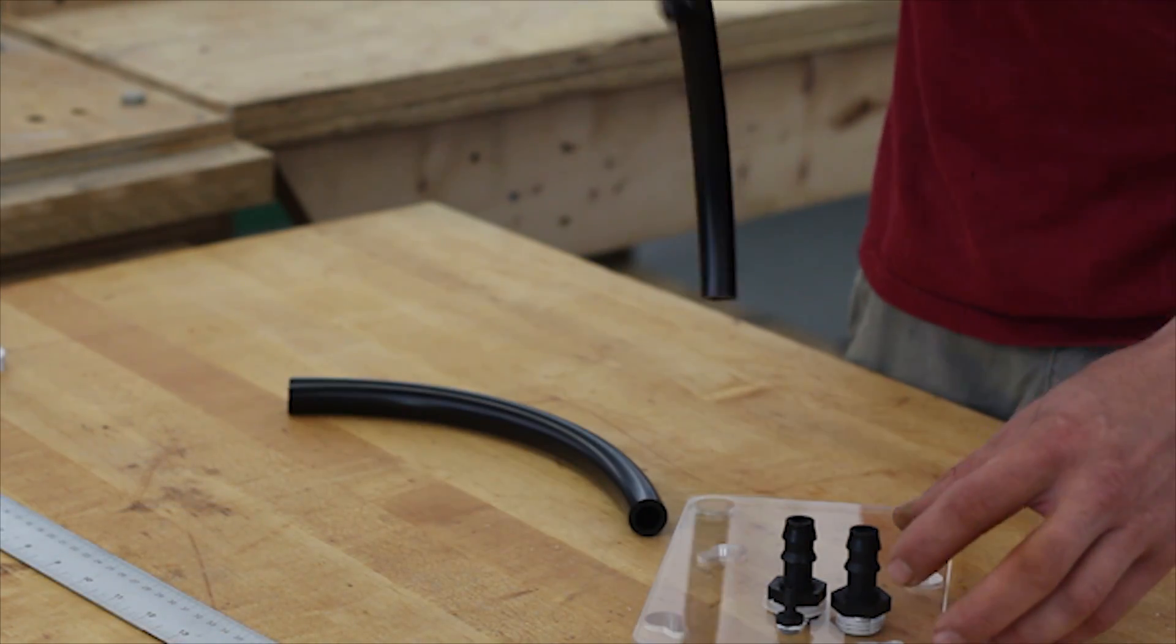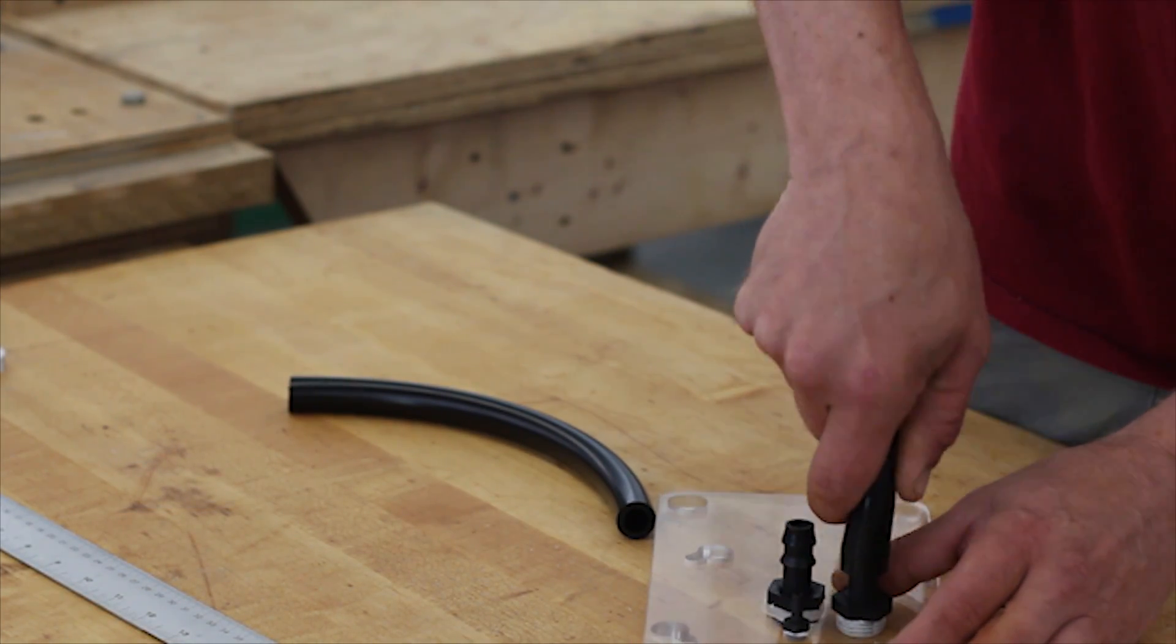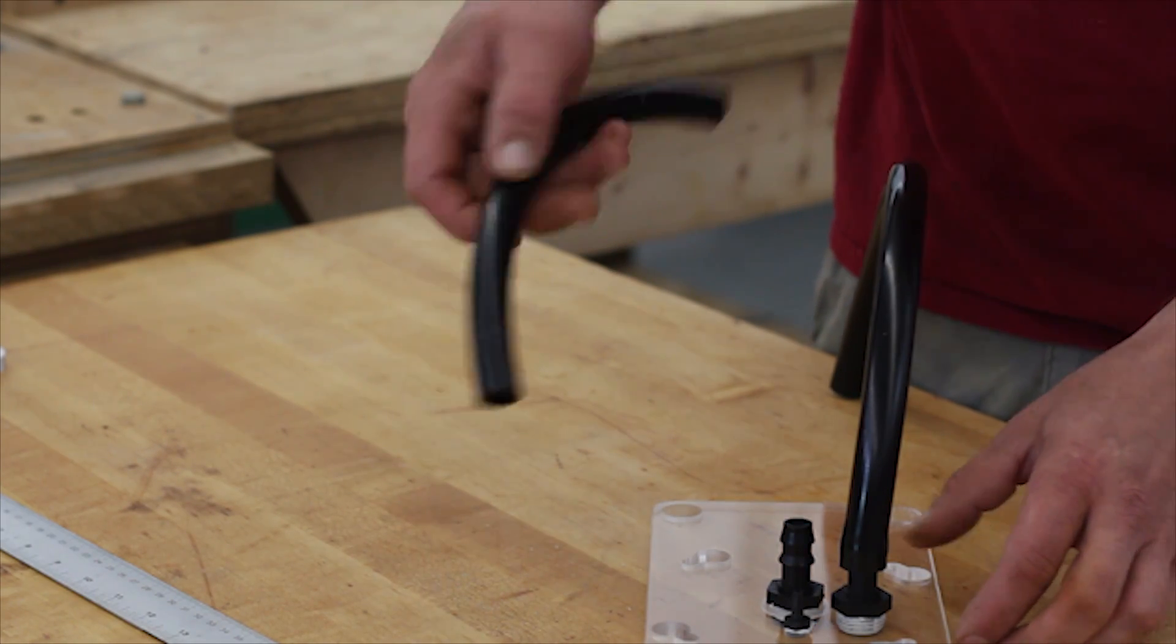Take the longest tube and put it on the barb that is offset to the side. The next longest piece of tubing goes to the middle barb.